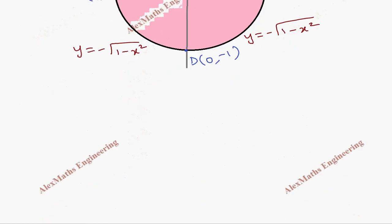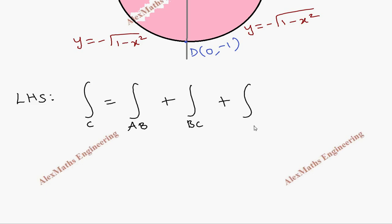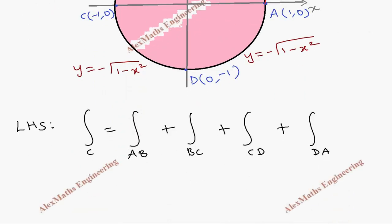Coming to the left-hand side of Green's Theorem, we take LHS as the integral over C, which is made up of four parts: A to B, B to C, C to D, and D to A. Each arc covers a separate region, and we evaluate them one by one.